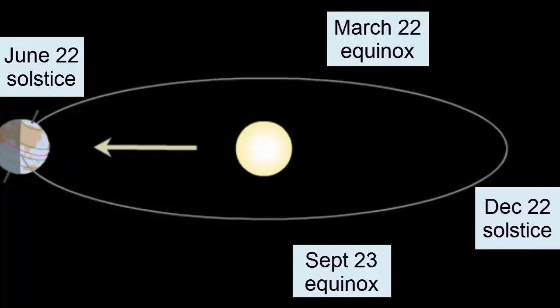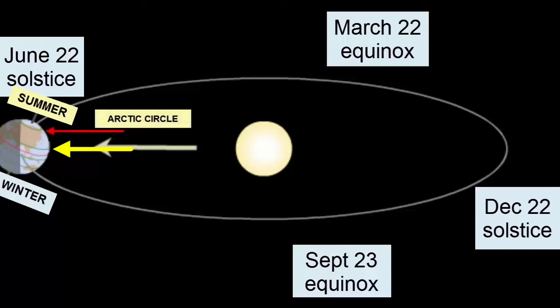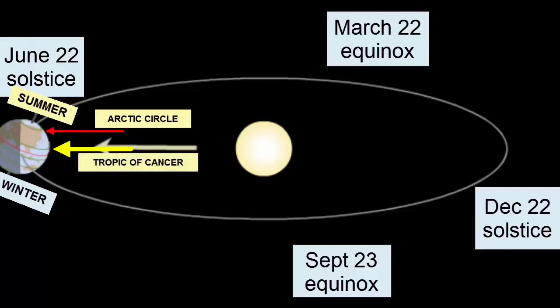Returning back to the June 22nd solstice, we see the tilt move the North Pole towards the Sun, so that the North Pole receives more and more hours of sunlight each day. At the solstice, the Northern Hemisphere experiences summer. All points within the Arctic Circle experience 24 hours of sunlight, and the Sun is directly overhead, providing its most intense heating at the Tropic of Cancer, at a location 23.5 degrees north of the equator.